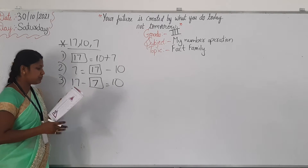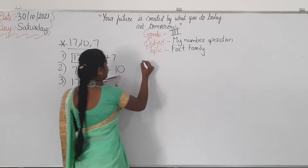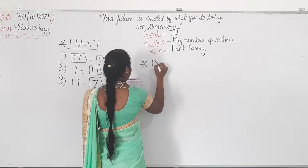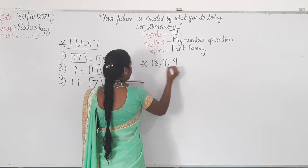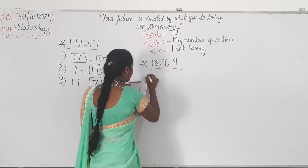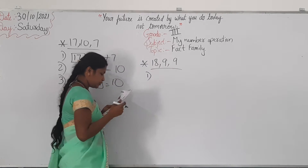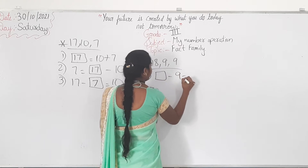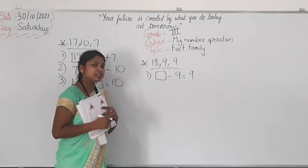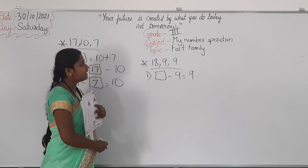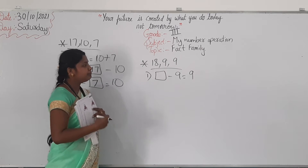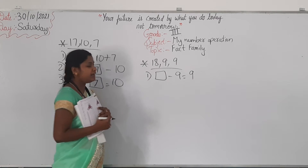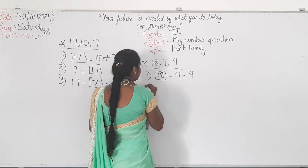Next, see page number 90. Which number will come? If you write 18 here, 18 minus 9 will be 9. So, 18 is the correct answer.